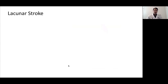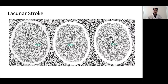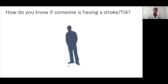Now, coming to lacunar strokes. As discussed, these strokes are due to blockage of small perforator arteries in the brain. These strokes are small in size, but their symptoms are not necessarily small. One important feature of lacunar stroke is that they do not have cortical symptoms such as aphasia, neglect, or hemianopia. There are five classical lacunar stroke syndromes: pure motor stroke, pure sensory stroke, sensorimotor stroke, ataxic hemiparesis, and clumsy hand-dysarthria syndrome.